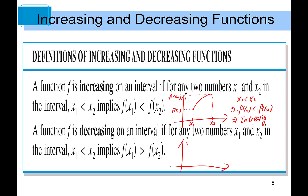A function f is decreasing on an interval if for any two numbers x1 and x2 in the interval, and if x1 is less than x2, it is guaranteed that f(x1) is always greater than f(x2). f(x1) is always on top of f(x2), and this gives us a decreasing interval. The difference between increasing and decreasing is that they are exactly opposite.